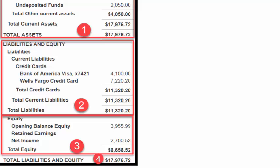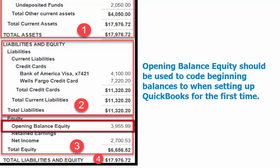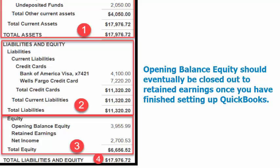Section 3 is Total Equity. In this section, Paul has Opening Balance Equity and Net Income listed. Opening Balance Equity is a default account created by QuickBooks. This account should be used to code beginning balances when setting up QuickBooks for the first time. For example, when you set up a bank account in QuickBooks, you have to enter the opening balance of that account so that you will be able to reconcile the account later on. The amount that you enter as an opening balance is coded to the opening balance equity account behind the scenes. This account should eventually be closed out to retained earnings once you have finished setting up QuickBooks.